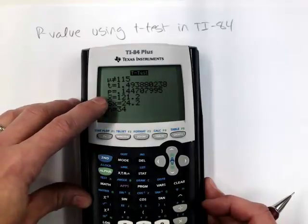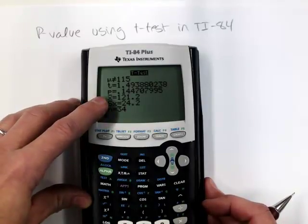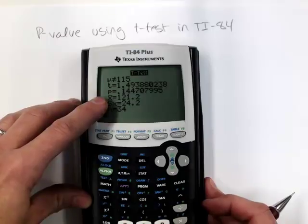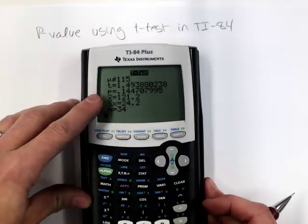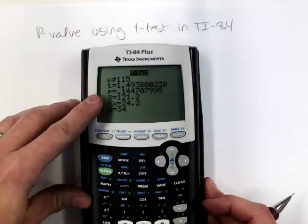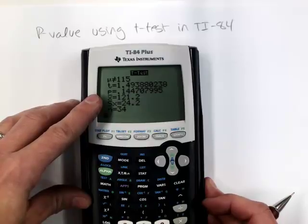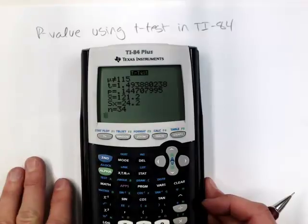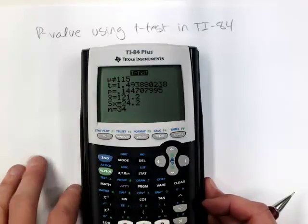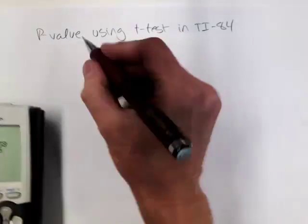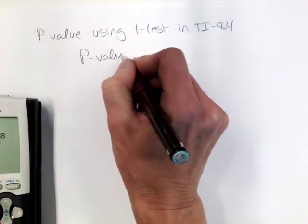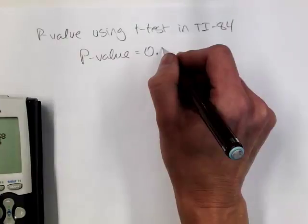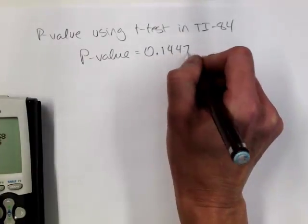So you can use the T test to do this in the calculator. That's fine. Now, because this is a two-tailed test, the calculator will double the p-value for you. So the output gives the correct p-value. When you put in the right alternative, it doubles it. Again, the table is limited. We'd only be able to get a range of values for the p-value. So always use technology to find the p-value. So the p-value in this case is 0.1447.